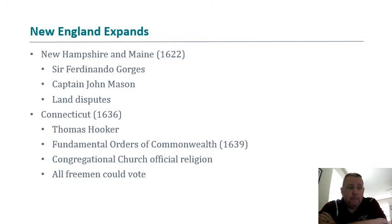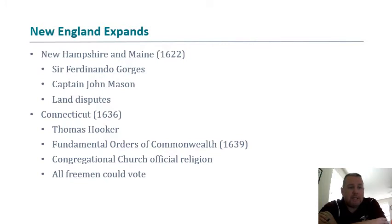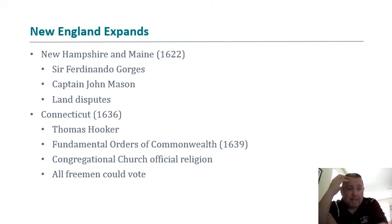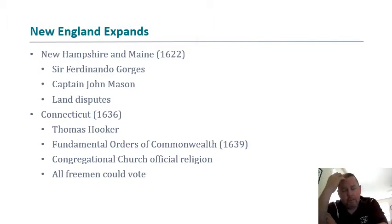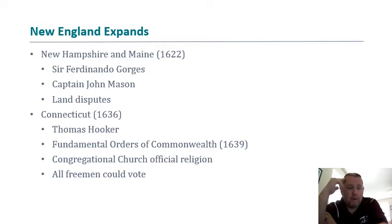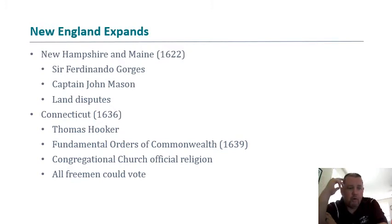New England continues to expand — that's a fairly common theme throughout colonization. As more Europeans arrive, expansion increases, to where the English are eventually trying to limit expansion in the new colonies. New Hampshire and Maine are chartered — New Hampshire ends up becoming its own royal colony and one of the 13, while Maine remains part of Massachusetts. New Hampshire and Massachusetts have land disputes that put them in conflict, ultimately leading to New Hampshire becoming an officially chartered colony. Connecticut is another offshoot to the south of Massachusetts — more along the Rhode Island mindset, with more religious tolerance and broader voting rights for the majority of white men.